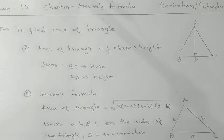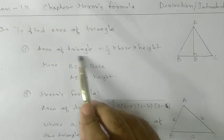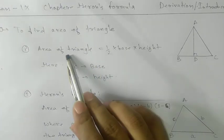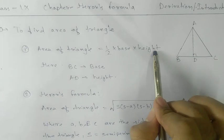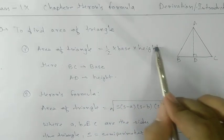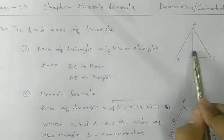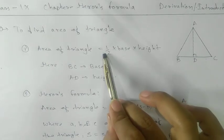A question will arise: we already have one formula, that is half into base into height. Then what is the importance of learning this one? As you can see in that formula, the area of a triangle equals half into base into height — you need both base and height to apply this formula.